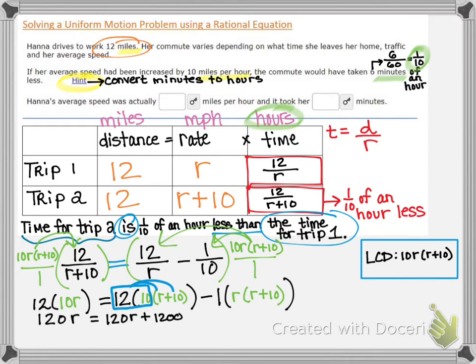Then we have minus, and we can think of it as distributing one R into the R plus 10. Actually, you could think of it as distributing negative one R. So we have negative R squared minus 10 R.